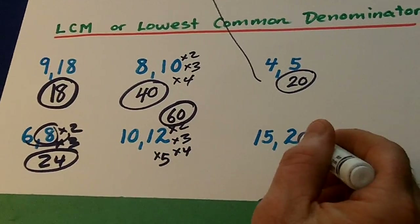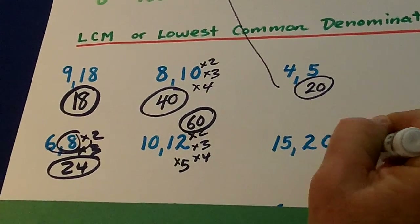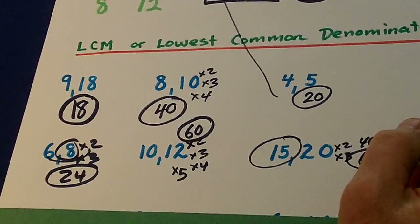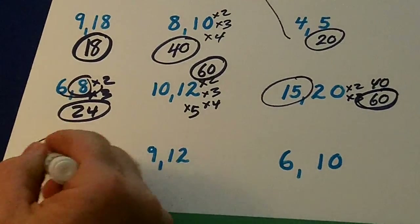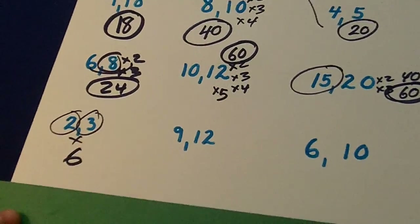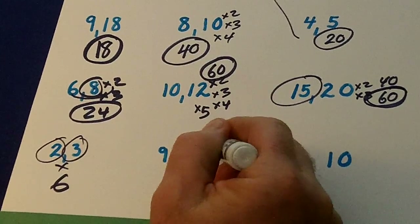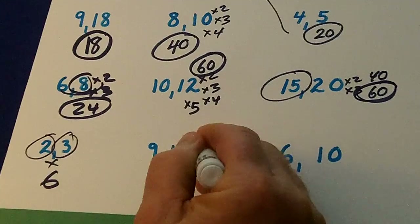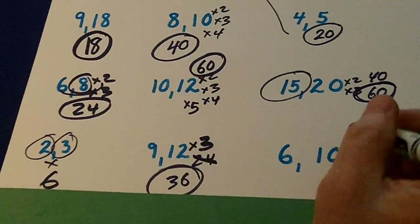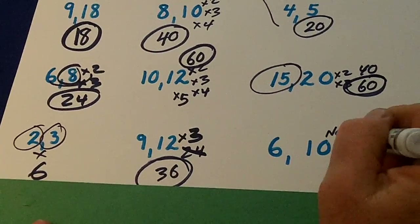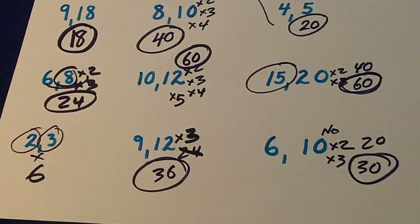15 and 20 — can 15 go into 20 evenly? No. Multiply by 2 is 40 — no. Multiply by 3 is 60 — can 15 go into 60? Yes, and so can 20; 60 is the answer. 2 and 3 — these are both prime, so you just multiply them together and get 6. 9 and 12 — can 9 go into 12? No. Multiply by 2: can 9 go into 24? No. Multiply by 3 is 36 — can 9 go into 36? Yes. And 6 and 10 — can 6 go into 10? No. 10 times 2 is 20 — no. 10 times 3 is 30 — yes. And there we have it. Thank you.